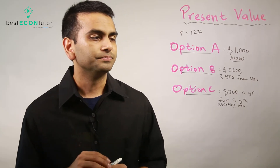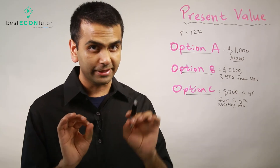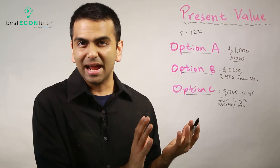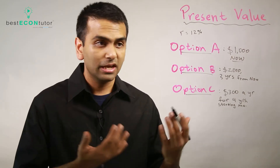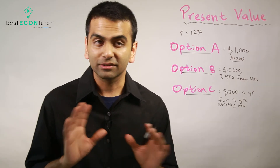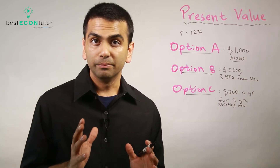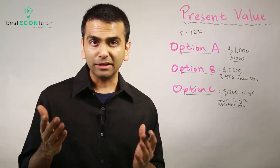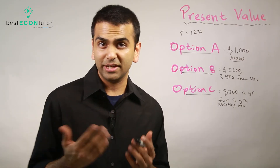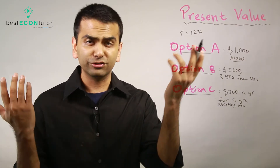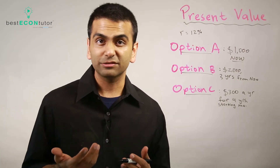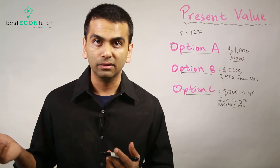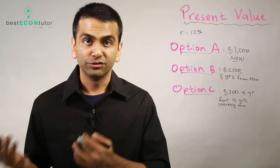Finally, let's look at present value — a way to compare options that involve money at different points in time. For example, suppose someone offers you three options: get $1,000 right now, get $2,000 three years from now, or get $300 per year starting now for four years. It's not immediately obvious which is best, because money received at different times isn't directly comparable.